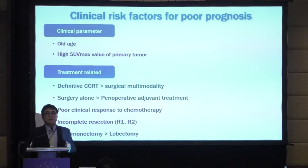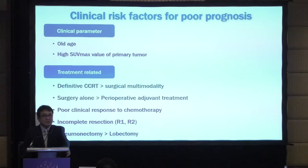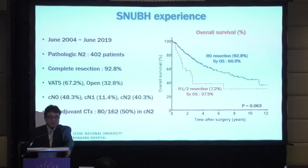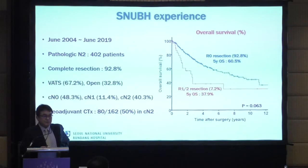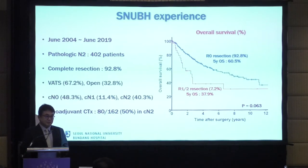For example, if a lobectomy can be done, you can proceed to surgery. But if pneumonectomy is required, you need to carefully evaluate whether to proceed with surgery or CCRT. This is our hospital experience: we checked years of pathologic N2, 400 cases. Complete resection was done in 92.8%, two-thirds of patients received surgery by VATS, and clinical N2 was 40%, meaning those patients received neoadjuvant therapy.